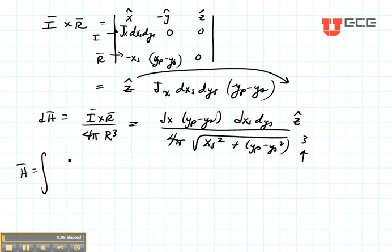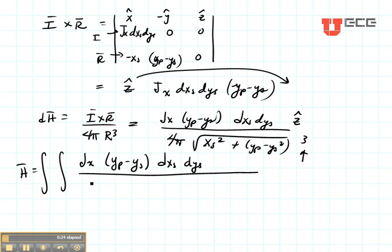H is going to be a surface integral in this case. Plug everything in so it's going to have JX YP minus YS DXS DYS divided by 4 pi XS squared plus YP minus YS squared, square rooted, cubed, and it's going to be in the Z direction.